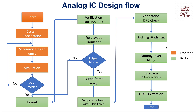For the IO pad, we have to select the IO pad depending upon your requirement. In the PDK documentation file, you will find the specification of the IO pad and you have to select it accordingly. For analog I/O, we can use an analog IO pad; for digital I/O, separate IO pads are there. For power line, the IO pad is separate — you have to select the IO pad and design the pad frame accordingly.